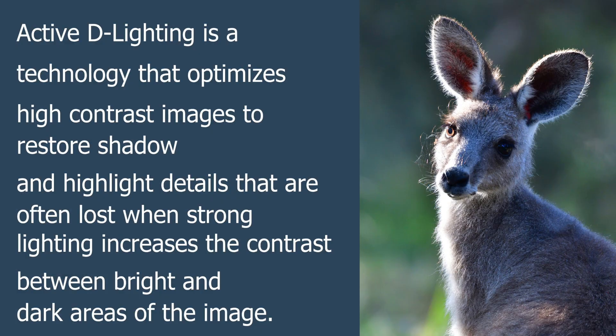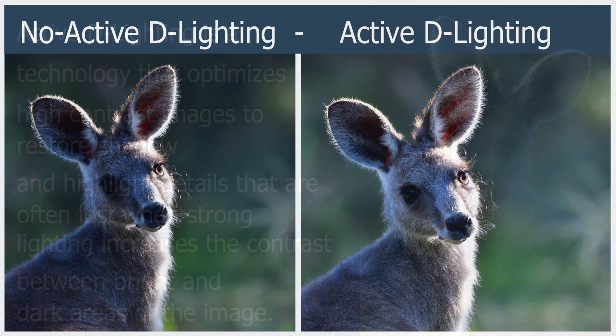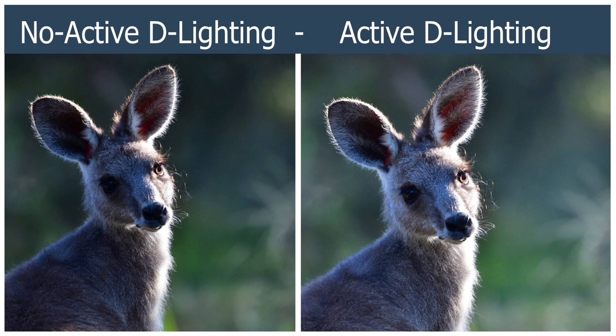A lot of people don't realize how Active D Lighting works and how it can improve your photo. What is Active D Lighting? Here is what Nikon says: Active D Lighting is a technology that optimizes high contrast images to restore shadow and highlight details that are often lost when strong lighting increases the contrast between bright and dark areas of your image. And here is an example of what Active D Lighting can do.